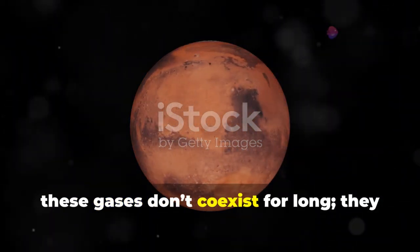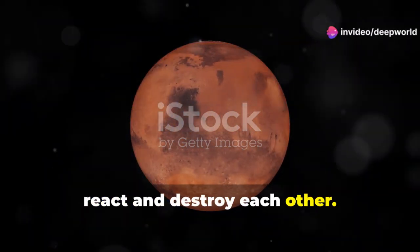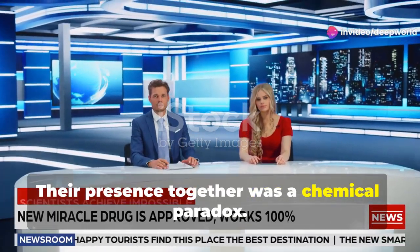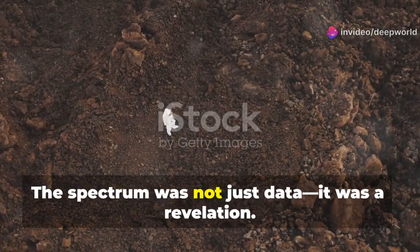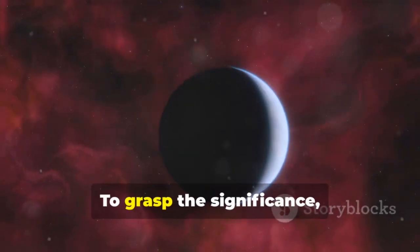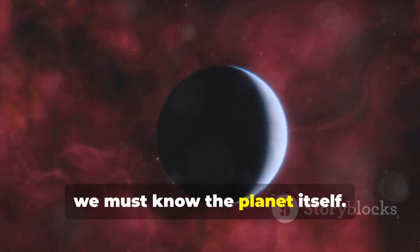On Earth these gases don't coexist for long—they react and destroy each other. Their presence together was a chemical paradox. The spectrum was not just data, it was a revelation. To grasp the significance, we must know the planet itself.